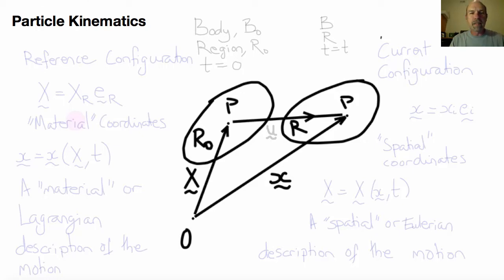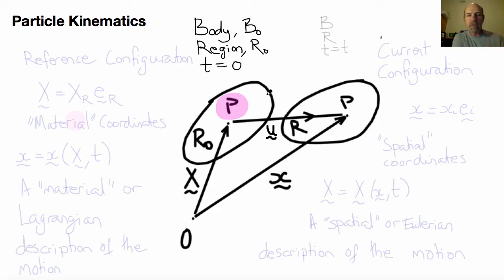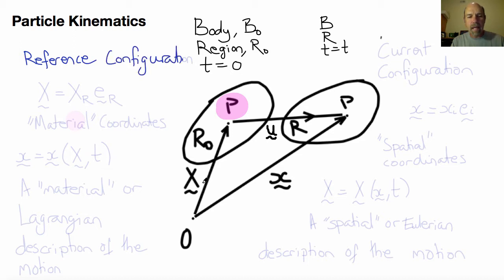Welcome back to BE110 Continuum Mechanics. We're going to start to consider how material continua move and deform by considering material point P in a body B0, in a material region R0 surrounding P at time t equals 0. At time t equals t, the body is now B and the material region surrounding P is R. The position of P in the original reference state B0 is capital X, and at time t in B is little x. The difference between little x and big X is the displacement vector U.